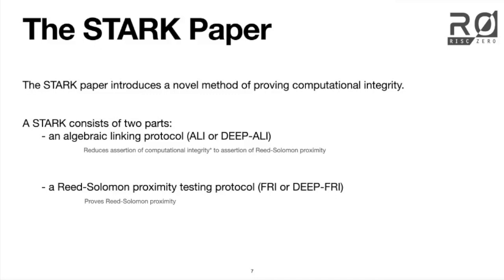Each of those two parts has two versions — a regular version and a deep version. We have algebraic linking without deep and algebraic linking with deep. On the Reed-Solomon side, without deep that's FRI, and with deep that's deep-FRI.